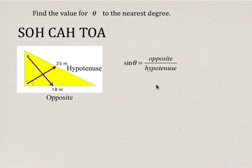So sine theta is equal to opposite over hypotenuse. That means that sine theta, if we substitute in for the values for opposite and hypotenuse, which is 18 over 25...